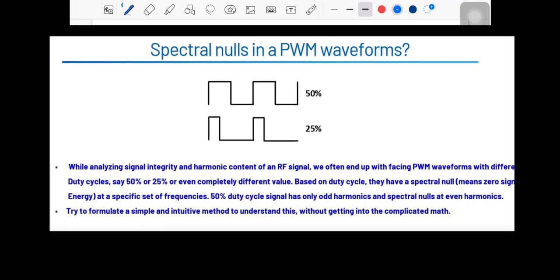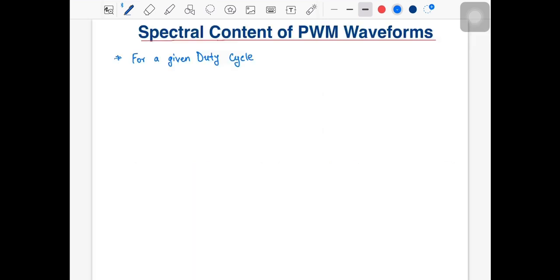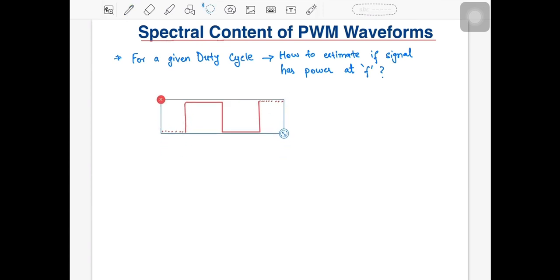Coming back to the post, he wrote about finding the frequency content of a pulse width modulated signal. Basically, if you know the duty cycle of this signal, then how can you estimate whether that signal would contain any power at a particular frequency? In this video, we'll look at how that can be done in a simple manner, and towards the end of the video, we'll recap some basic properties of a periodic signal which can come in handy when dealing with periodic signals.